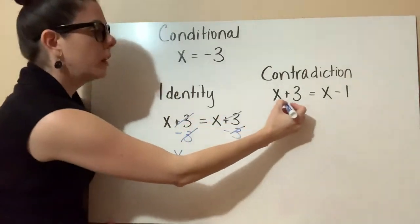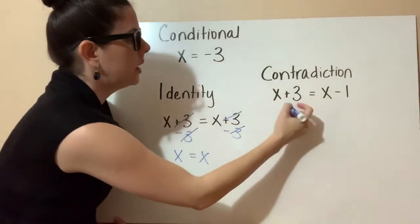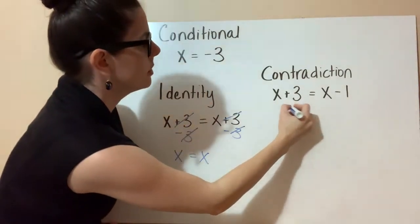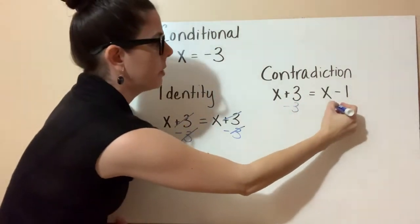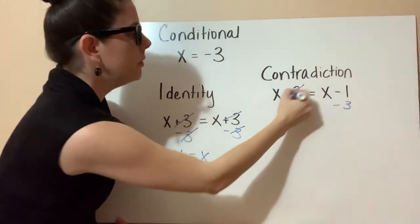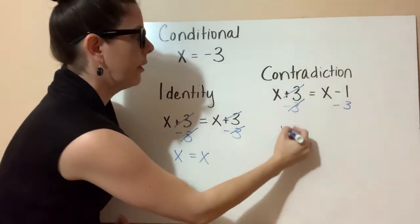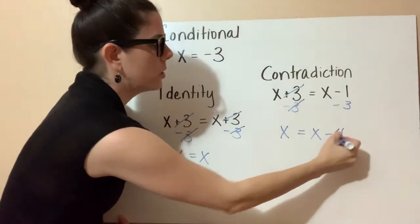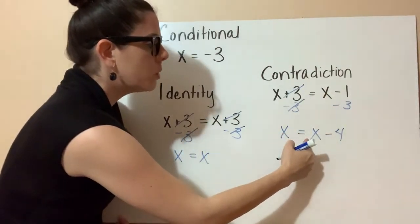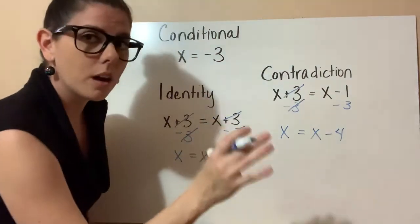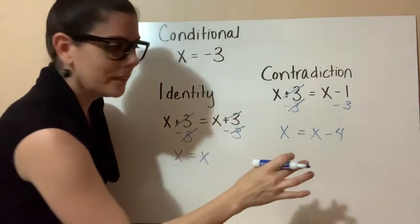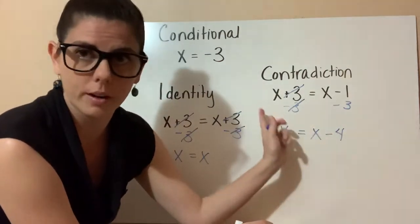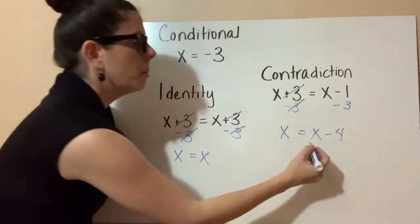If we come over here, if I subtract 3, and then I'm going to subtract 3, that would cancel out. I would have x equals, and then negative 1 and negative 3 equals negative 4. x equals negative 4. So we're not quite proving it yet, but you can kind of see that x is never going to equal x minus 4, no matter what you put in for x.